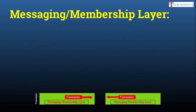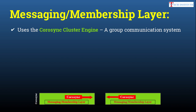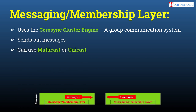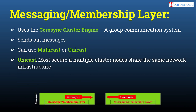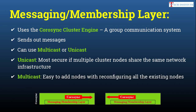First we'll look at the messaging and membership layer. In this layer, Corosync is the main component, which is the group communication system. Using Corosync only, cluster nodes communicate with each other. It sends out health messages — like whether a node is alive or not functioning properly. It can use multicast or unicast for this communication. If you are using multiple clusters in the same network, you should use unicast as it is more secure and only the nodes inside the cluster can communicate with each other.